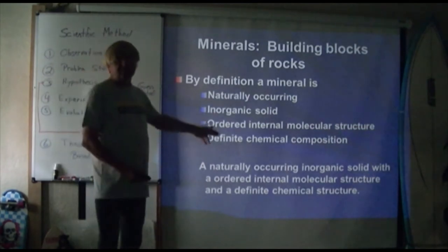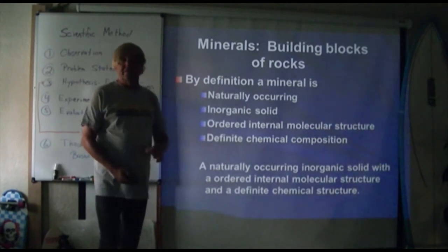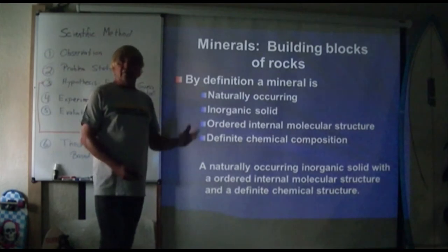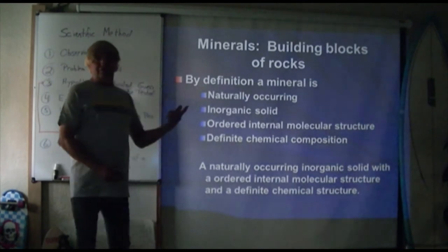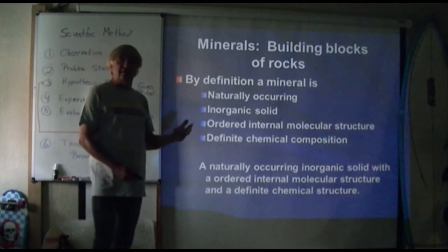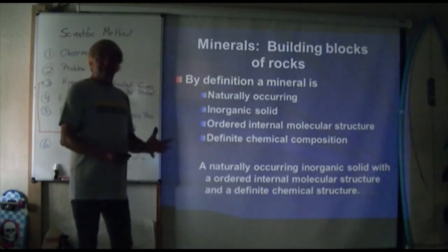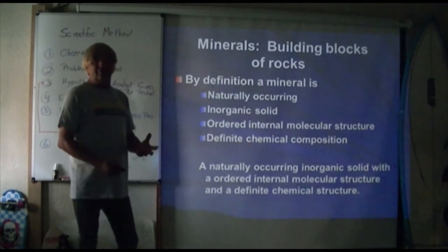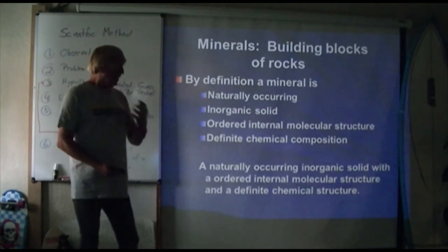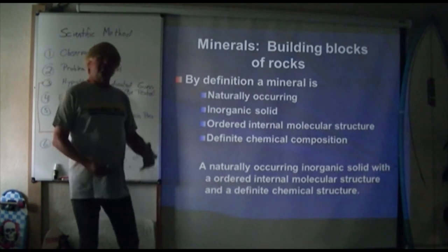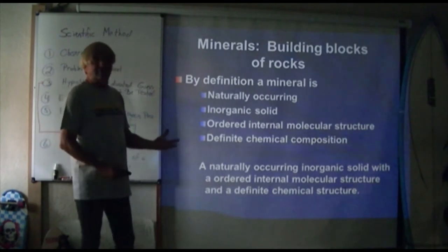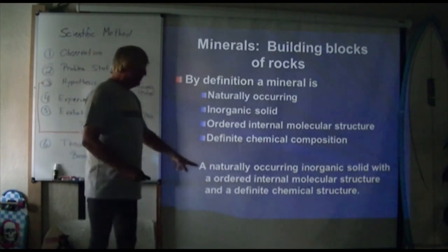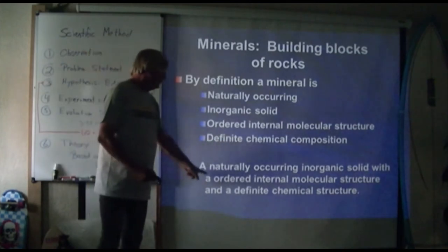A mineral has an ordered internal molecular structure and a definite chemical composition. Minerals can be either an element — like gold, which can form a crystal and qualify as a mineral — or a compound of two or more elements, such as sodium, a metal, and chlorine, a gas. Those two elements come together to form sodium chloride. As geologists we call that mineral halite; any common person would call it salt, which we eat almost every day.